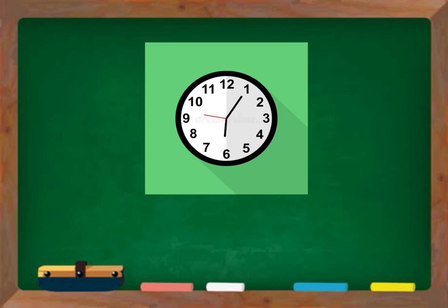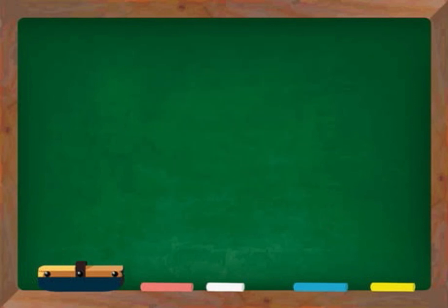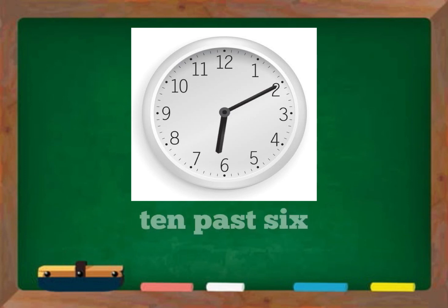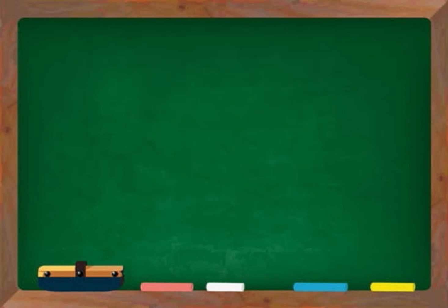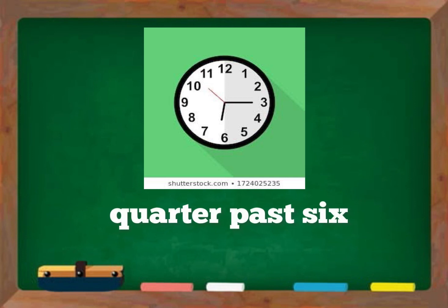For example, it's five past six. Five past six. Five past six. Ten past six. It's quarter past six. It's quarter past six.